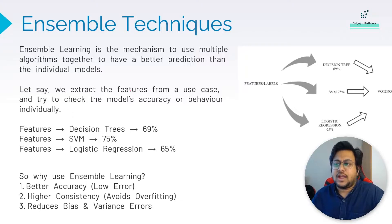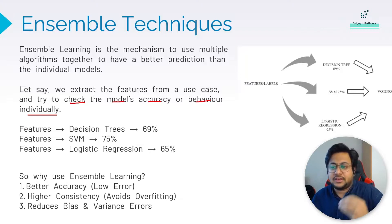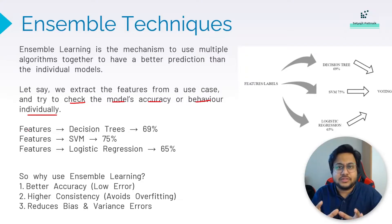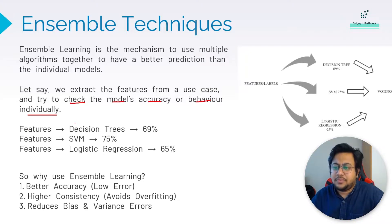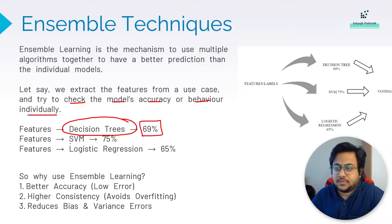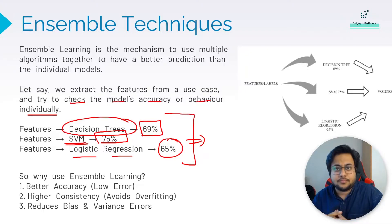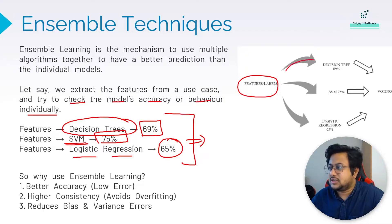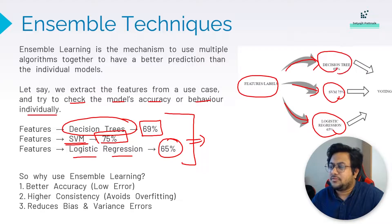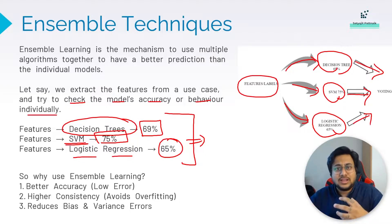Imagine we extract features from a breast cancer prediction use case — blood sugar level, age, gender, and more. A decision tree classifier gives 69% accuracy, SVM gives 75%, and logistic regression gives 65%. None are great individually. What we need is a hybrid model. We can create a voting ensemble — taking predictions from different models and using their votes to determine the output.